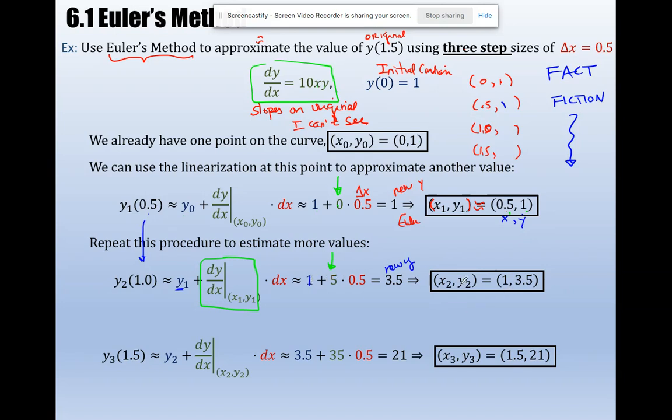When x was 1, changing from 0.5 to 1, my new y was 3.5. Lather rinse and repeat. This is my new point.